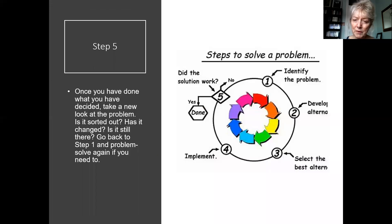Step five: when you've actually done this, when you've actually really taken those steps to solve that problem, take a new look at it again. Reflect. Is it sorted out now? Has it changed? Is it still there? Go back to step one then and problem-solve again if you need to. So it doesn't mean you failed if it's not been solved absolutely. What it means is that you might need to go back and start the process again.